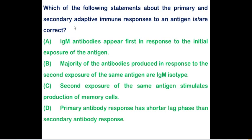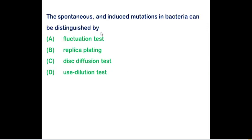Which of the following statements about primary and secondary adaptive immune responses to antigen is correct? IgM antibodies appear first in response to initial antigen exposure — correct. Option B states the majority of antibodies in the secondary response are IgM — this is incorrect, as IgG predominates in the secondary response. Option C — second exposure stimulates production of memory cells — is correct. Option D — primary response has a shorter lag phase than secondary — is incorrect, as the secondary response has a shorter lag due to memory cells. So options A and C are correct.